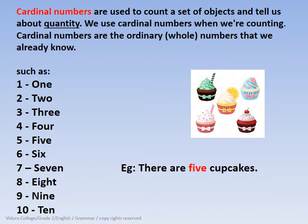Cardinal numbers are used to count a set of objects and tell us about quantity. We use cardinal numbers when we are counting. Cardinal numbers are the ordinary numbers that we already know, such as 1, 2, 3, 4, 5, 6, 7, 8, 9, 10. They are cardinal numbers.